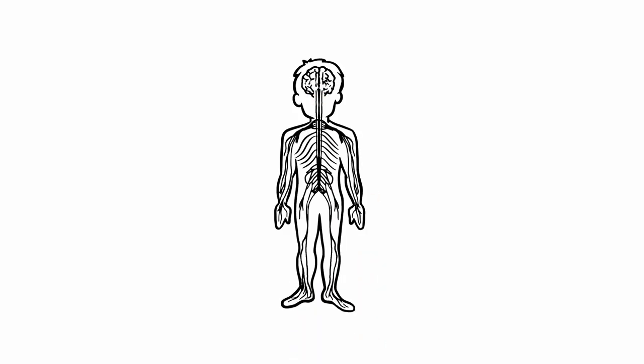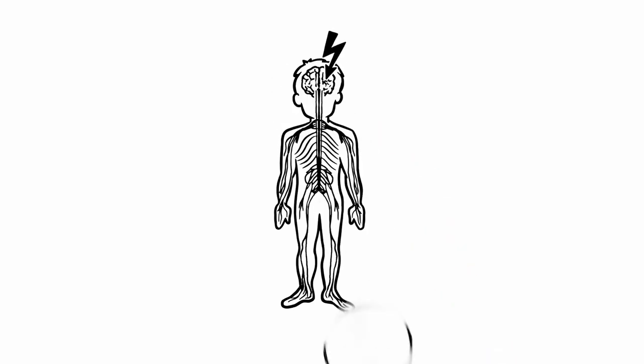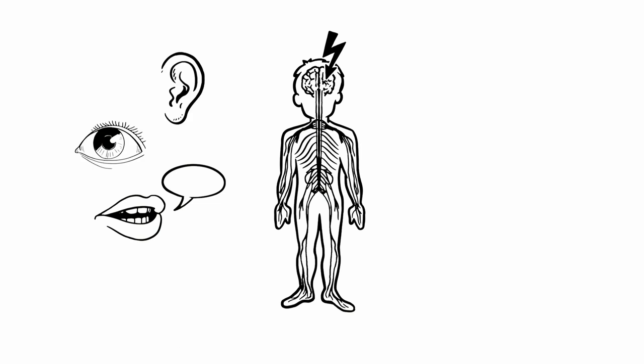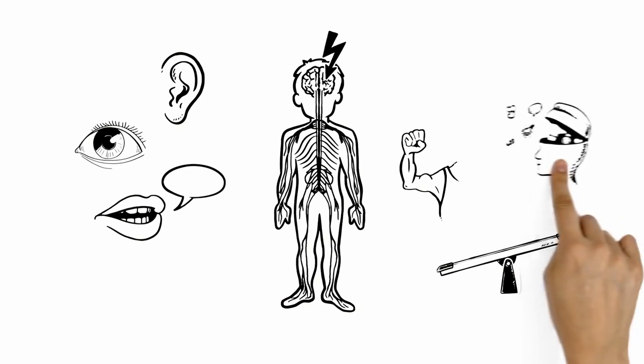As our brain controls the whole body, there are a great variety of different effects of stroke depending on the area of the brain that is damaged. They can include difficulties with speaking, seeing, or hearing, balance and coordination problems, muscle weakness, confusion, or memory loss.